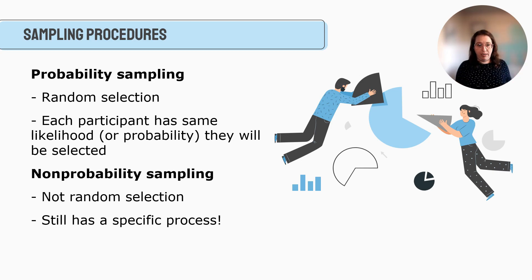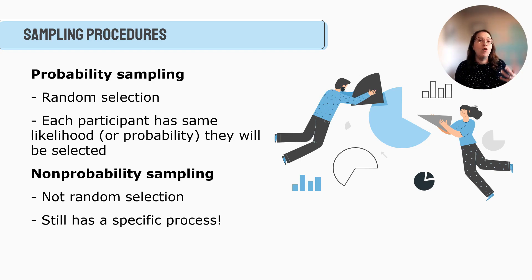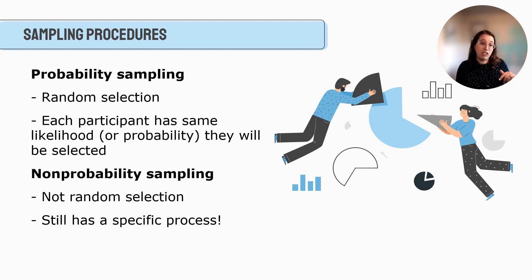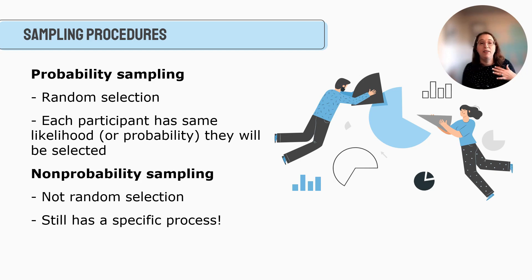There are two categories of sampling procedures. Probability sampling is based on random selection, where each participant has the same likelihood or probability of being selected — like flipping a coin where both sides have an equal chance. There's also a Pew Research video in the module that shows the difference between probability and non-probability sampling really well.